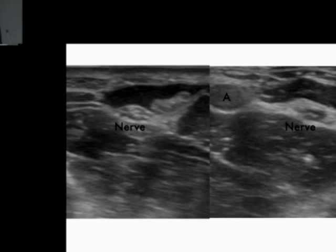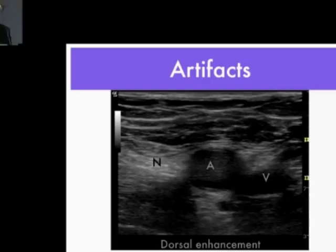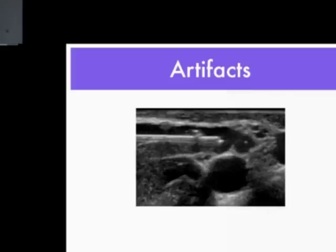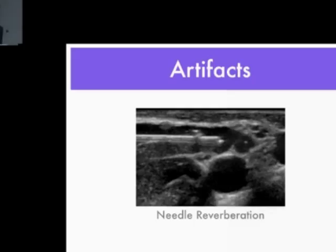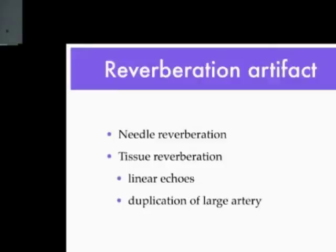Artifacts are another pitfall. There is often an artifact deep to a large artery called a dorsal enhancement artifact — do not get this mixed up with nerves, which are lateral to the artery. Another artifact is the needle reverberation artifact, which is actually a good artifact: it means the needle is in plane with the ultrasound beam, producing extra images of the needle deep to the real image due to ultrasound waves reflecting within the needle. There is also tissue reverberation comprising linear echoes and duplications of a large artery.